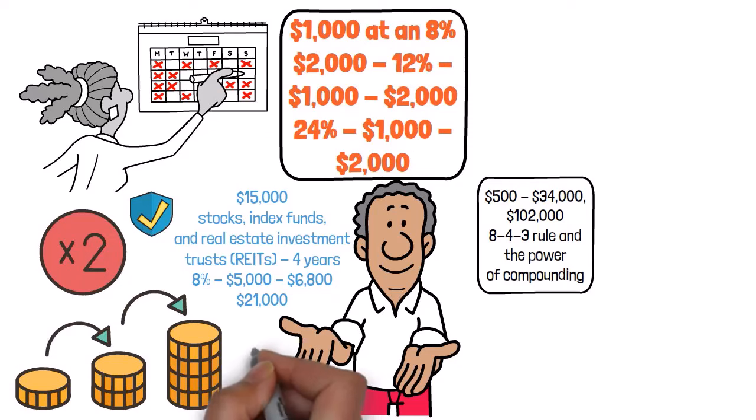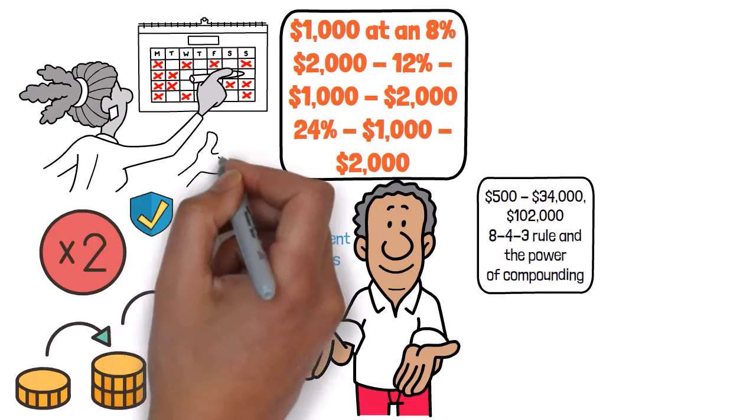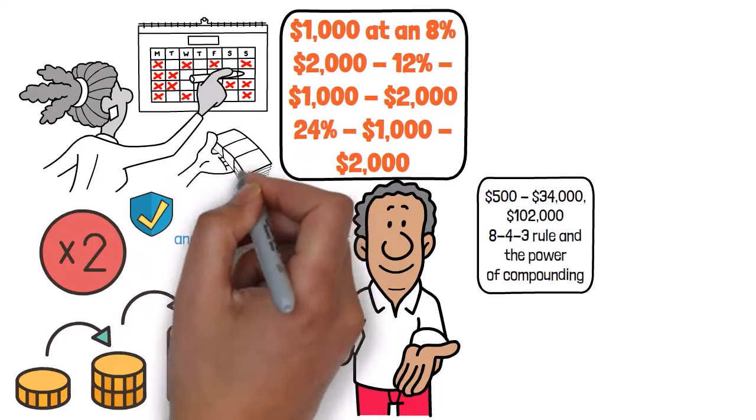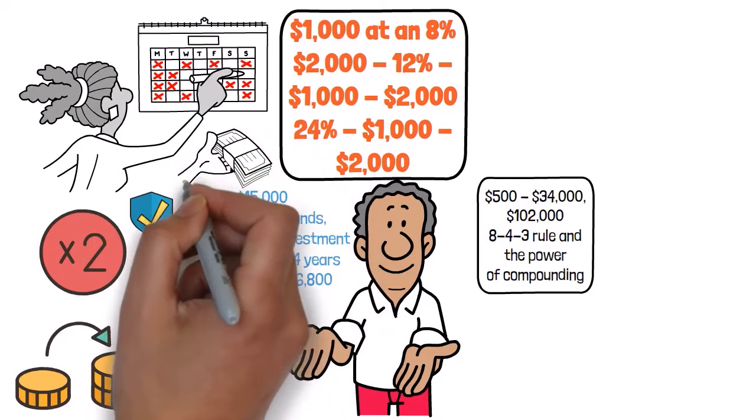But how do we start implementing this rule? It's all about keeping things simple and sticking to some basic principles of intelligent investing. First up, start early and stay consistent. It is like planting seeds in your garden. You want to get them in the ground as soon as possible so they have plenty of time to grow.